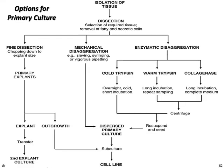In fine dissection, a primary explant produces outgrowth that can be subcultured; you can also transfer the explant to another plate for a secondary explant culture. For mechanical disaggregation by sieving, syringing, or vigorous pipetting, you obtain a dispersed primary culture that you can continue to subculture until establishing a cell line.